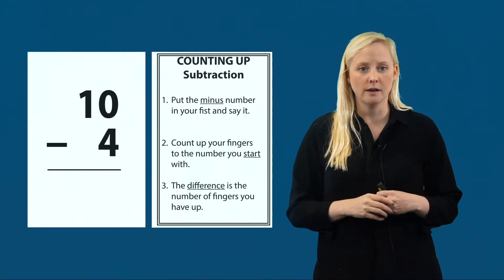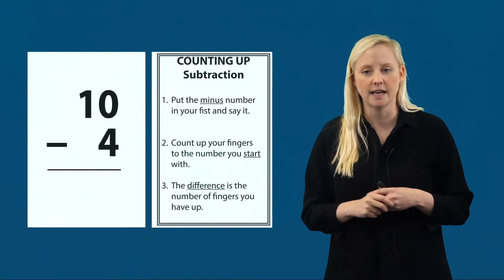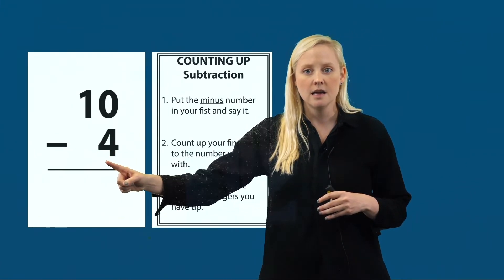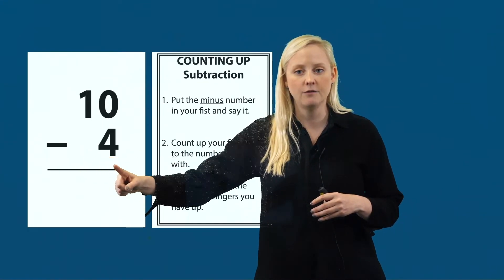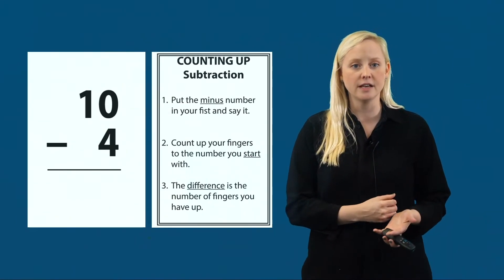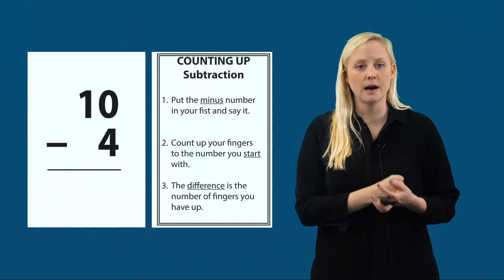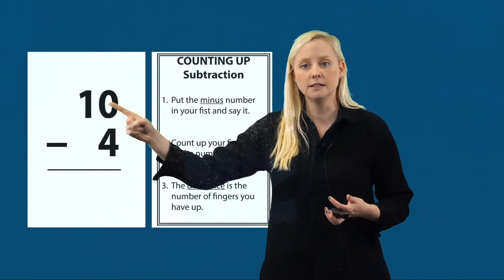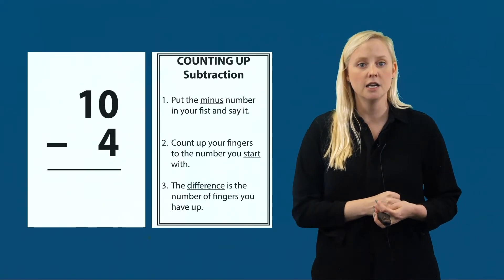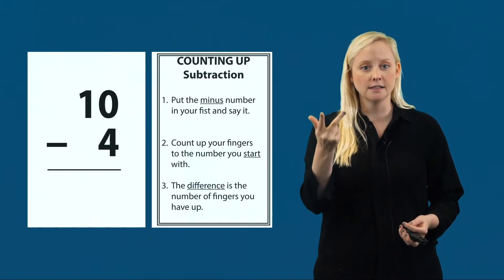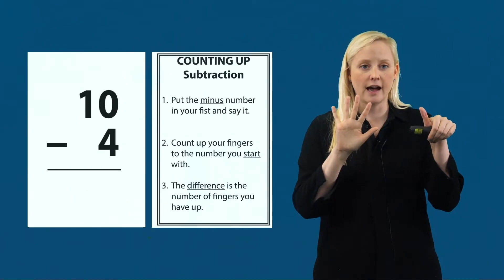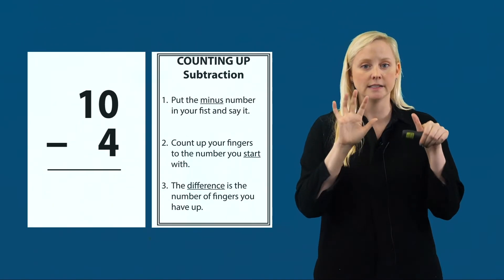Step one: put the minus number in your fist and say it. The minus number is the number directly after the minus sign. Here the minus sign is followed by four, so four is our minus number. I put four in my fist: four. Then I count up to the number I start with, which is ten. Starting at four and counting up to ten: four, five, six, seven, eight, nine, ten. The difference is the number of fingers I have up — I have six fingers up, so my difference is six.